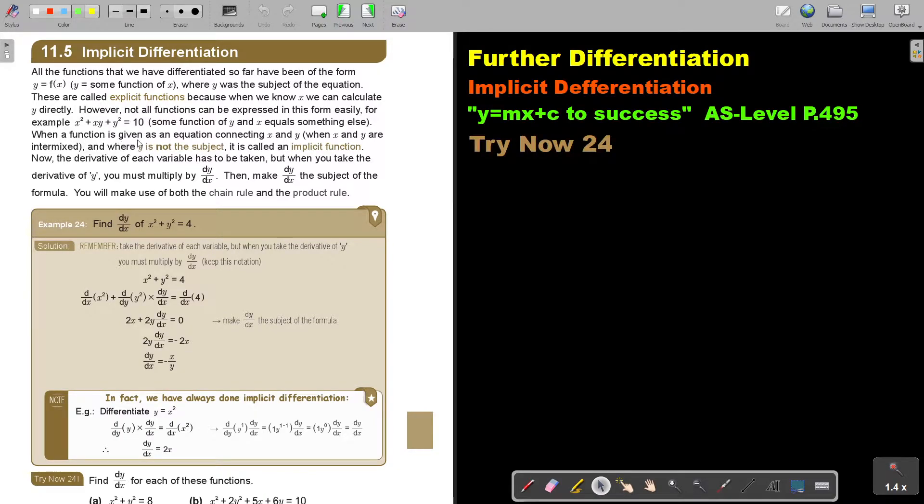When a function is given as an equation connecting x and y, when x and y are intermixed, so it's mixed on one side, and where y is not the subject, it is called an implicit function.